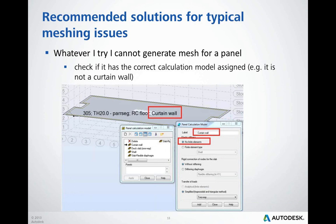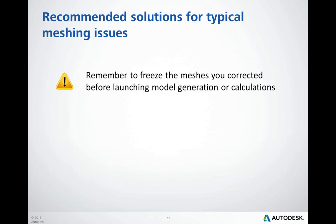Sometimes the issue with meshing is very simple — for example, you made a mistake in assigning the panel calculation model, such as selecting a curtain wall where no finite elements are to be defined. So before exploring other options, make this simple check first. Also remember: if you forget to freeze the meshes that you manually corrected, they will be regenerated and you will have to redo all the work from the beginning.